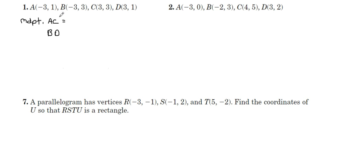Okay, the midpoint of AC is the average of the x and y coordinates. The y coordinates, 3 plus 1 is 4, 4 divided by 2 is 2. And then the x coordinates, negative 3 plus 3 is 0, 0 divided by 2 is still 0. That is our midpoint.